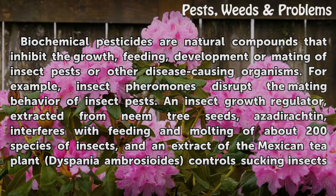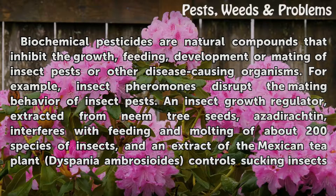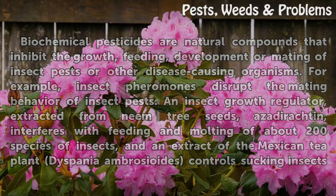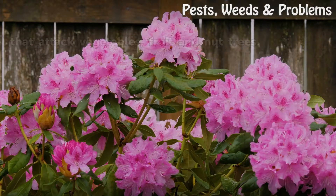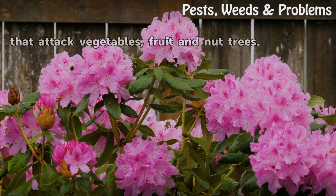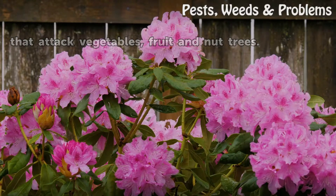An insect growth regulator extracted from neem tree seeds interferes with feeding and molting of about 200 species of insects, and an extract of the Mexican tea plant Dispania Ambrojoids controls sucking insects that attack vegetables, fruit, and nut trees.